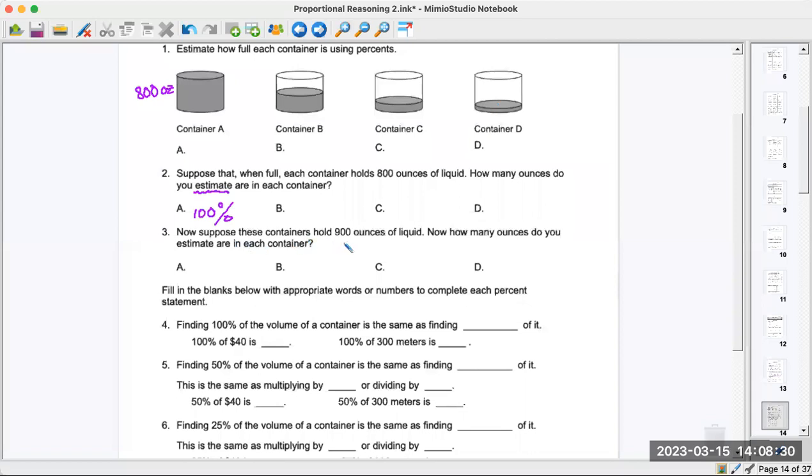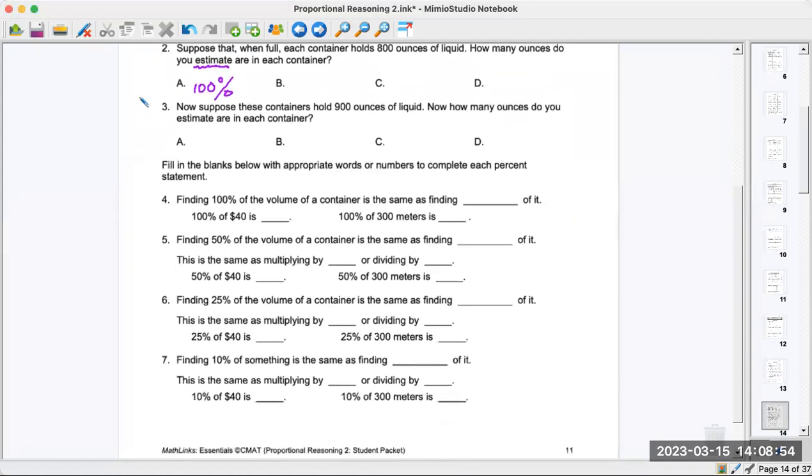Now suppose these containers hold 900 ounces of liquid. How many ounces do you estimate in each container? We're changing it to 900 when it's full. So you decide how many in here, how many ounces in here, and so on and so forth.